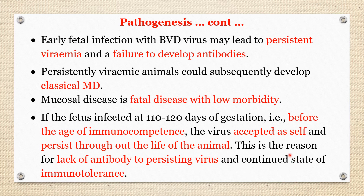Virus is present but no antibody exists, and the animal continues throughout life in a state of immunotolerance. Immunotolerance is the state of unresponsiveness of the immune system to a substance or tissue that has the potential to induce an immune response. The fetus does not respond immunologically to the virus, so no antibody is produced and the virus continues for the whole life.